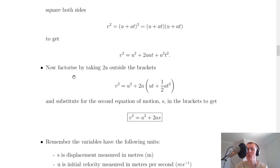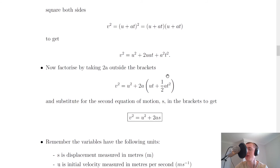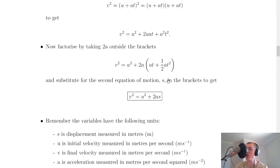Now we factorize by taking 2a outside the brackets on the right-hand side, giving v² equals u² plus 2a(ut plus half at²). The half is introduced because we introduced the 2, so 2 times a half makes the fraction disappear. This expression in the brackets should look familiar — it's the second equation of motion, s. So we substitute s for that bracket to get v² equals u² plus 2as. That's us derived the third equation of motion.